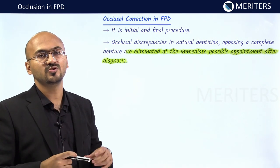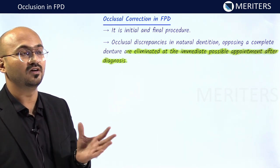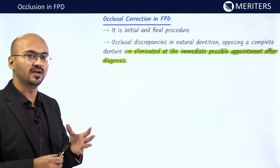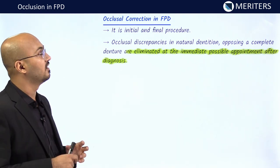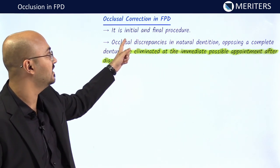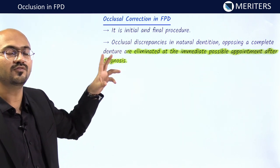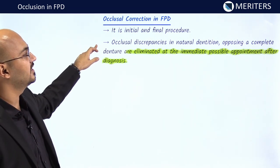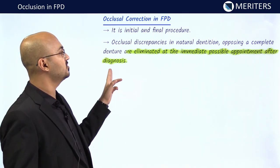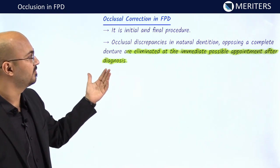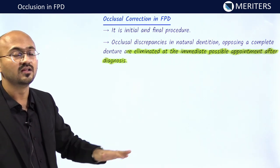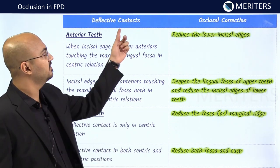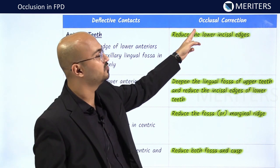Based on the vertical and horizontal determinants, you decide the occlusal morphology. After taking a wax trial and coping trial, you proceed to occlusal correction in FPD. Occlusal correction is both an initial and final procedure — you first identify natural interferences in the existing dentition, modify those first, then address the prosthesis. Occlusal discrepancies in natural dentition opposing a complete denture are eliminated at the earliest possible appointment after diagnosis.